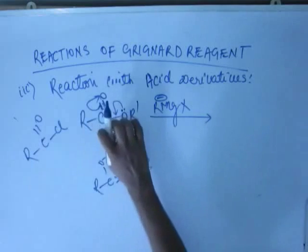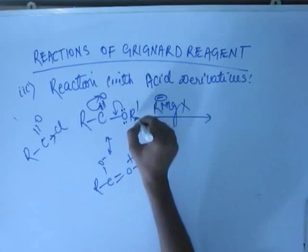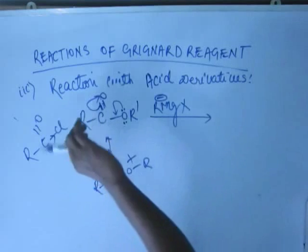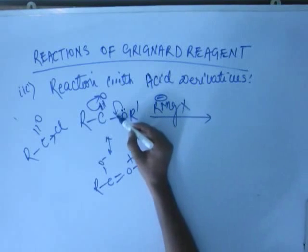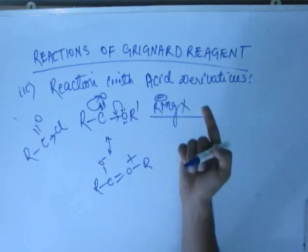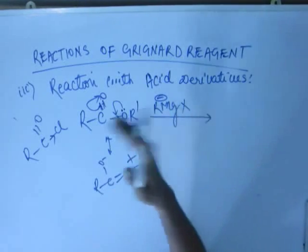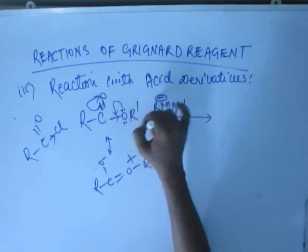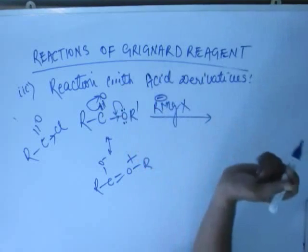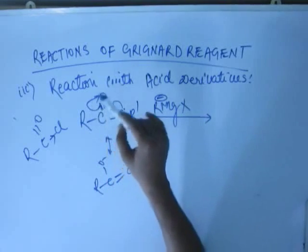In acyl chloride, Chlorine was taking electrons rather than giving them. But here we have OR, so OR will be giving electrons. Oxygen is electronegative and will pull some electrons by inductive effect, but it gives more electron density by plus M effect than it pulls by inductive effect. So the overall nature of OR is electron-donating, which mitigates the charge on this carbon.